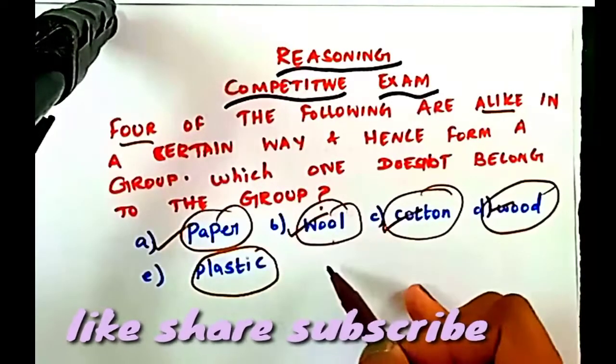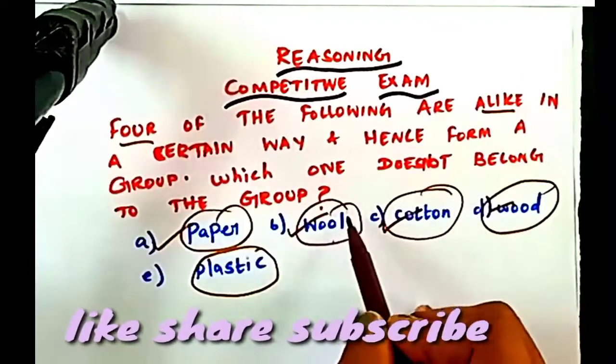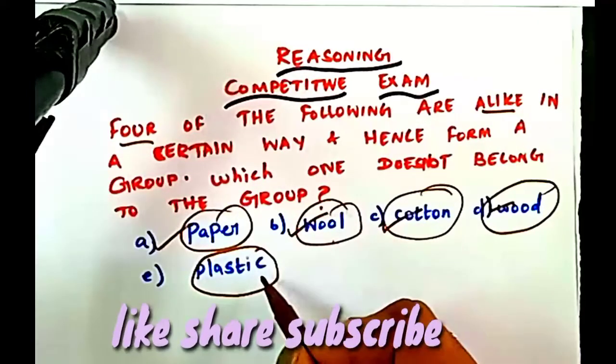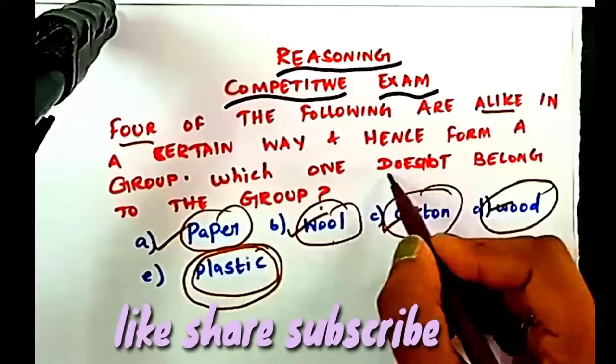Human is created. Paper, wool, cotton. These are naturally available materials, these are the same group. Plastic is odd man out. Option E is the correct answer. In this group, you will find plastic.